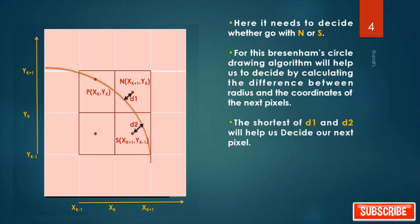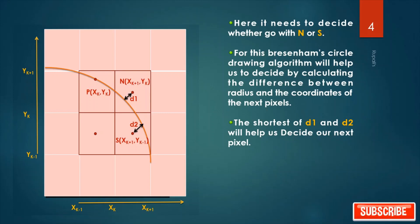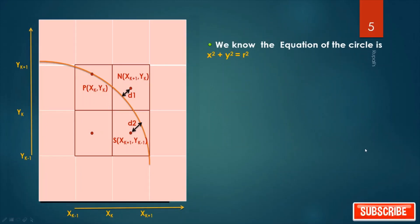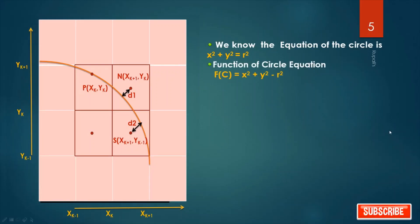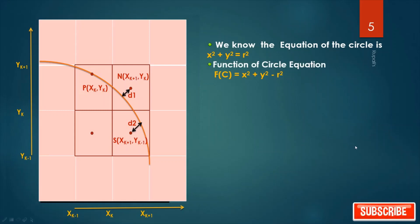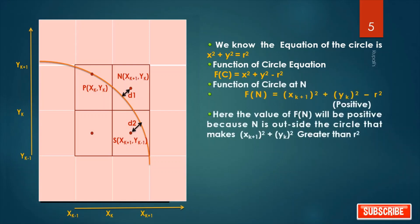The shortest of d1 and d2 helps us decide our next pixel — if d1 is shortest we choose N, if d2 is shortest we choose S. We know the equation of the circle is x² + y² = r². So the function of the circle is fc = x² + y² − r².